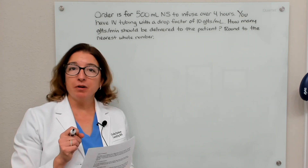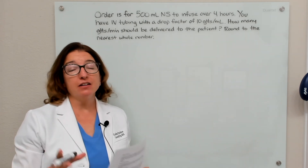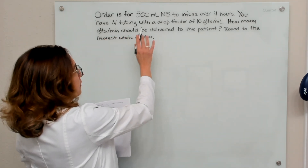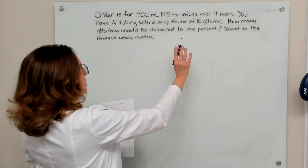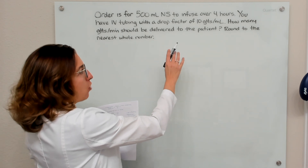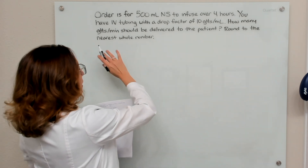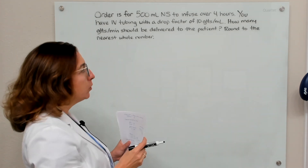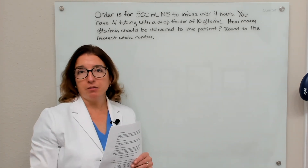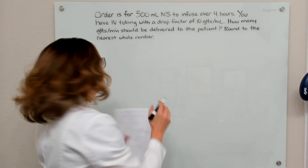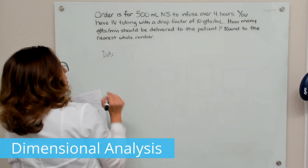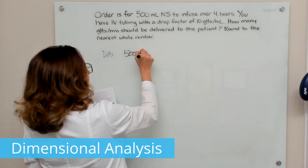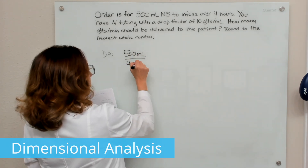Let's work through our first example problem pertaining to IV infusions delivered through gravity. We have an order for 500 milliliters of normal saline to infuse over four hours, with IV tubing having a drop factor of 10 drops per ml. We want to find out how many drops per minute should be delivered to the patient, rounded to the nearest whole number. The most efficient way to solve this is with dimensional analysis.